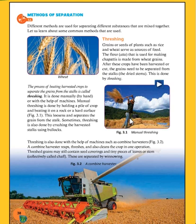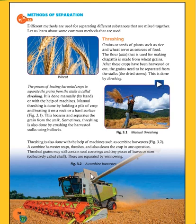Sometimes threshing is also done by crushing the harvested stalk using bullocks. Threshing is also done with the help of machines such as a combine harvester — this machine is used for threshing. A combine harvester reaps, threshes, and also cleans the crop in one operation — in one go it cuts, cleans, and separates.